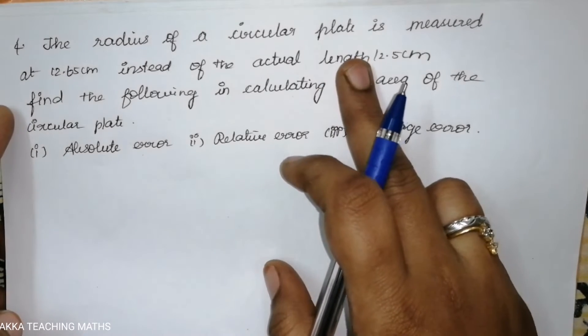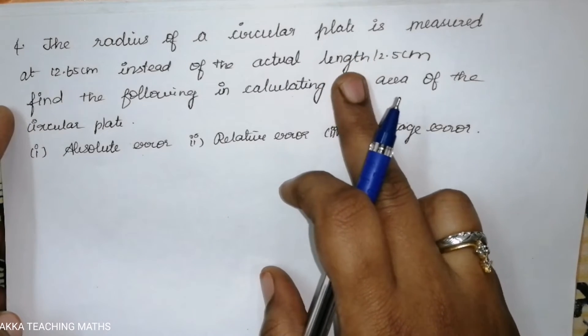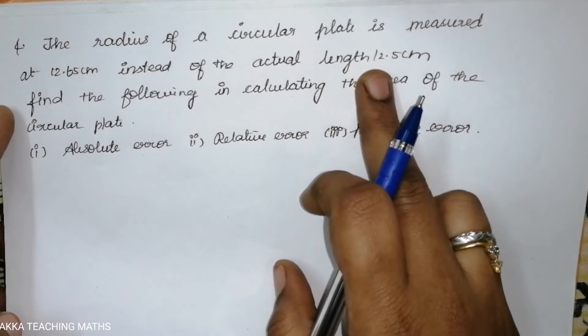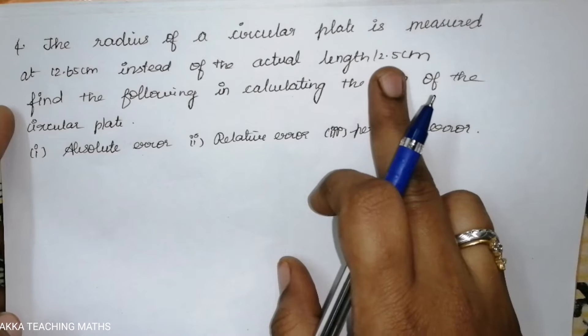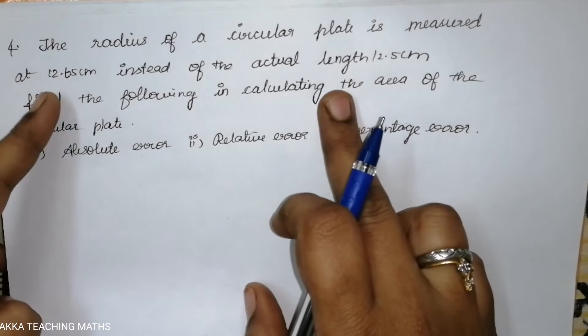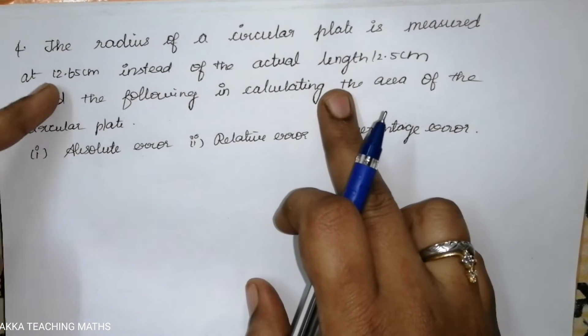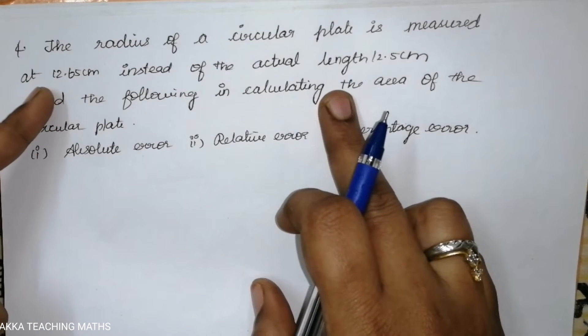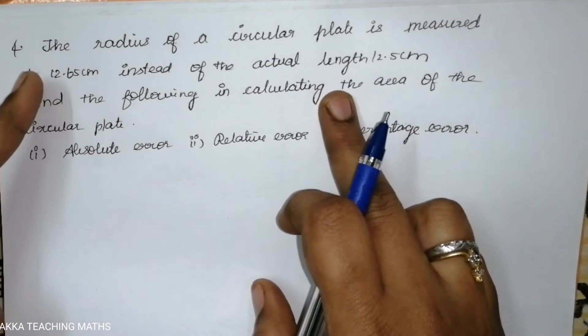The circular plate has an actual length of 12.5 cm. But the measured value — that is, the error measurement — gives 12.65 cm.